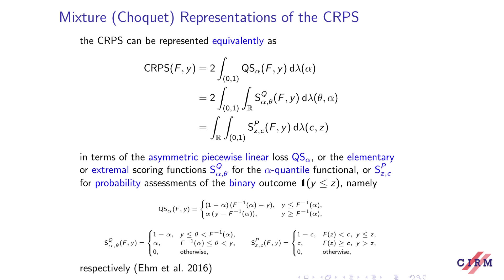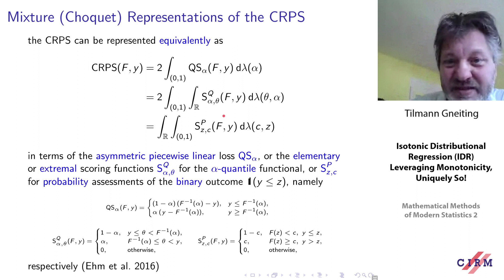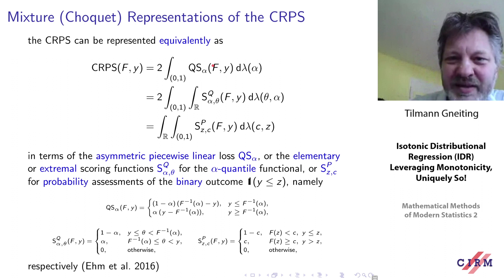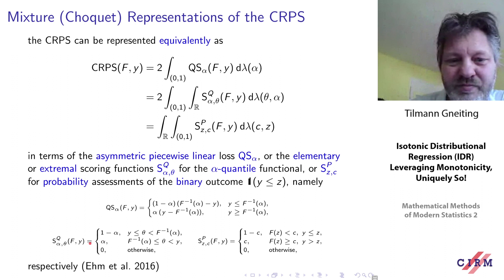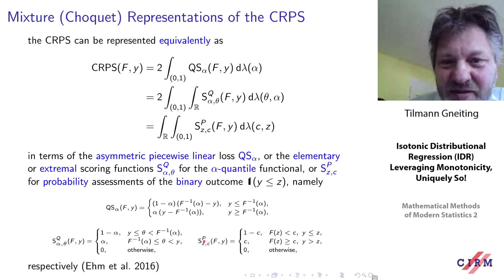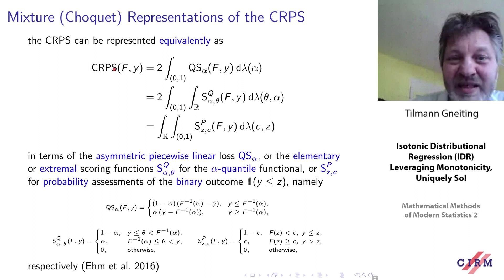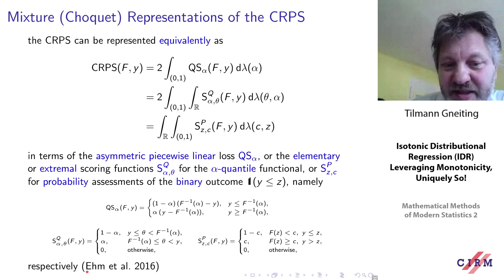The CRPS will be our preferred score. There are three equivalent representations of the CRPS as mixtures over elementary building blocks: the standard piecewise linear quantile score using quantile regression, and elementary scoring rules for quantiles and for probability forecasts of binary events. The CRPS admits various representations in terms of simpler building blocks, detailed in a JRSS-B discussion paper by Ehm, Gneiting, Jordan, and Krüger in 2016.